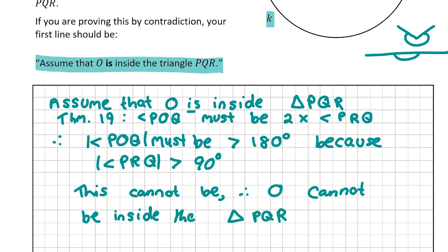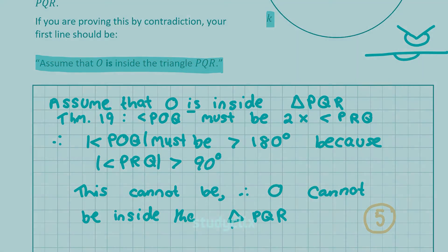Instead of writing out 'triangle PQR' in full, you can use the triangle notation symbol followed by PQR. In my opinion, question C was quite difficult, but it's only worth five marks, so there's no need to panic. That's all for this video — thank you very much for watching, and I'll see you all in the next video.